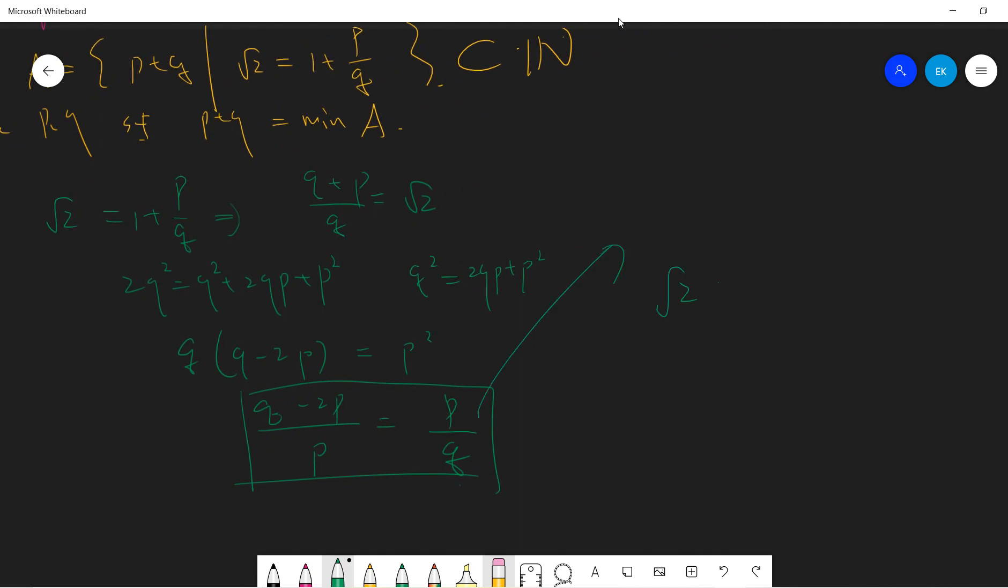So that means one can write square root of 2 as 1 plus p divided by q equals 1 plus q minus 2p divided by p. I mean it looks strange, but if you think about it you find a contradiction. The reason is that we already said p plus q is a minimum.